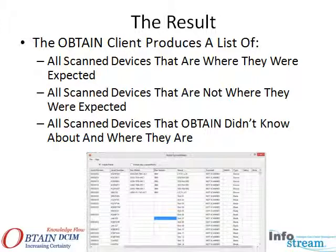Obtain uses this process to compare the DCIM database to what is seen on the floor. Obtain can then produce an exception list of assets it knows about but have moved, a list of assets that have not been documented, and a list of what the knowledge base believed should be there but was not found in the audit.